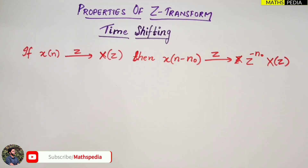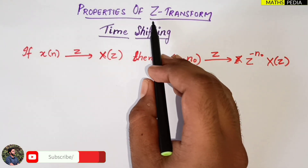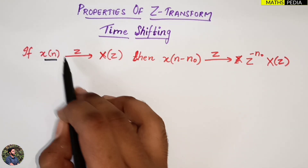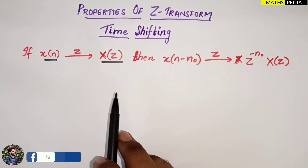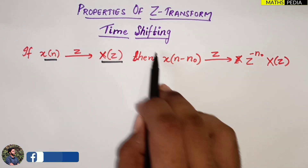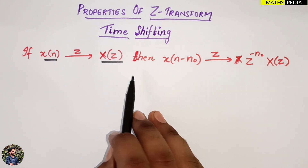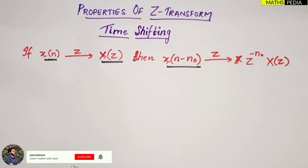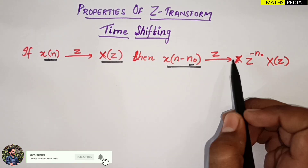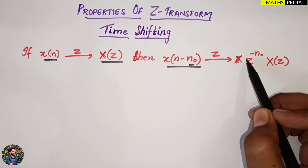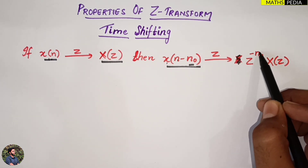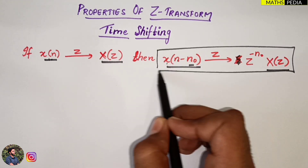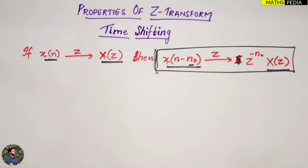In this video we will be discussing the time shifting property, which comes under properties of the Z-transform. Let us see the definition first. If x(n) is a signal, the Z-transform of x(n) will be X(z). For time shifting, x(n) becomes x(n minus n-naught). The Z-transform of that will be equal to z power minus n-naught into X(z). This is the time shifting property, and this is what we have to prove.